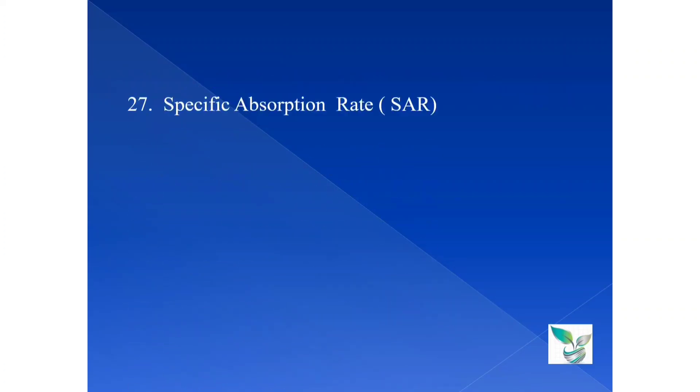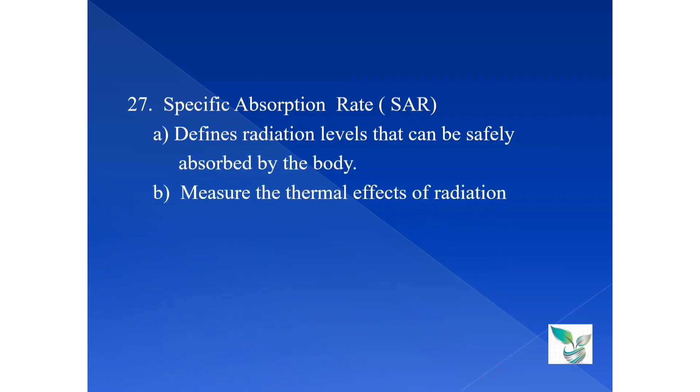Moving on to the next question, question number 27. Specific absorption rate. Option A, defines the radiation level that can be safely absorbed by the body. Option B, measures the thermal effects of radiation for a brief amount of time. Option C, represents the rate of radiofrequency absorption rate in body tissues. Option D, all of these.